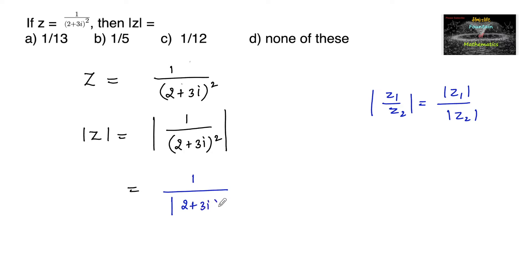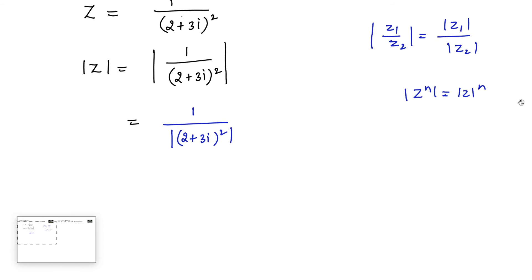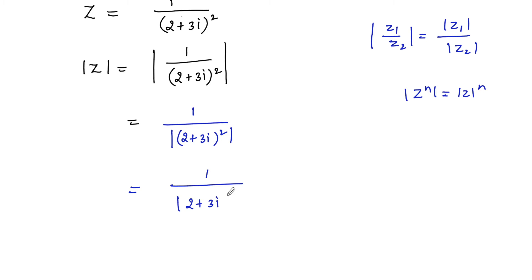Also, we have modulus of z power n is equal to mod z whole power n, for n an integer. So we can write 1 upon modulus of (2 + 3i) whole square. And if z is equal to a + ib, then modulus of z is equal to square root of a squared plus b squared.